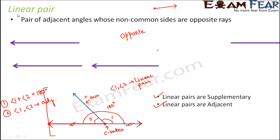Why are they called a linear pair? The term 'linear' refers to a line. Angle one and angle two together form a straight line, making a straight angle — that is why they are called a linear pair.